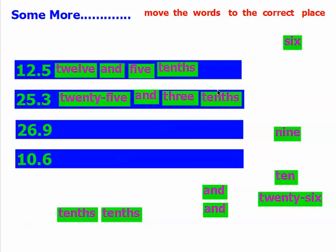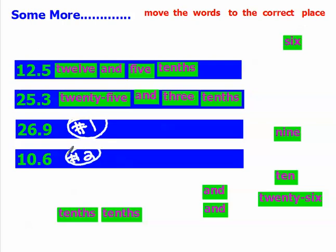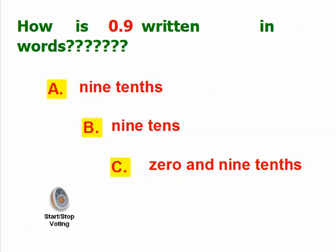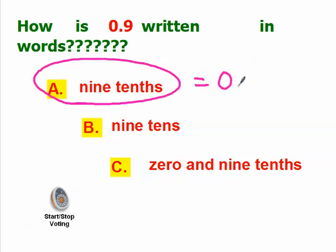In your notebooks, write these next two numbers down — number 1 and number 2 — and write the words for what each number is. Now let's practice the opposite way. We have 0.9. There are no whole numbers, we have a decimal, and the digit directly to the right of the decimal is in the tenths — and there are nine of them. So we say the number first: 9 tenths equals 0.9.